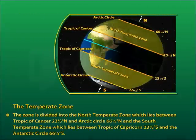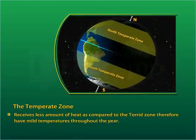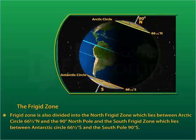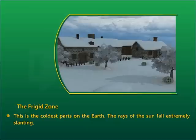The temperate zone is divided into the north temperate zone, which lies between the Tropic of Cancer, 23.5 degrees north, and the Arctic Circle, 66.5 degrees north, and the south temperate zone, which lies between the Tropic of Capricorn, 23.5 degrees south, and the Antarctic Circle, 66.5 degrees south. It receives less heat than the torrid zone and has mild temperatures throughout the year. The frigid zone is divided into the north frigid zone, between the Arctic Circle, 66.5 degrees north, and the North Pole, 90 degrees north, and the south frigid zone, between the Antarctic Circle, 66.5 degrees south, and the South Pole, 90 degrees south. This is the coldest part of the Earth, where the rays of the sun fall extremely slanting.